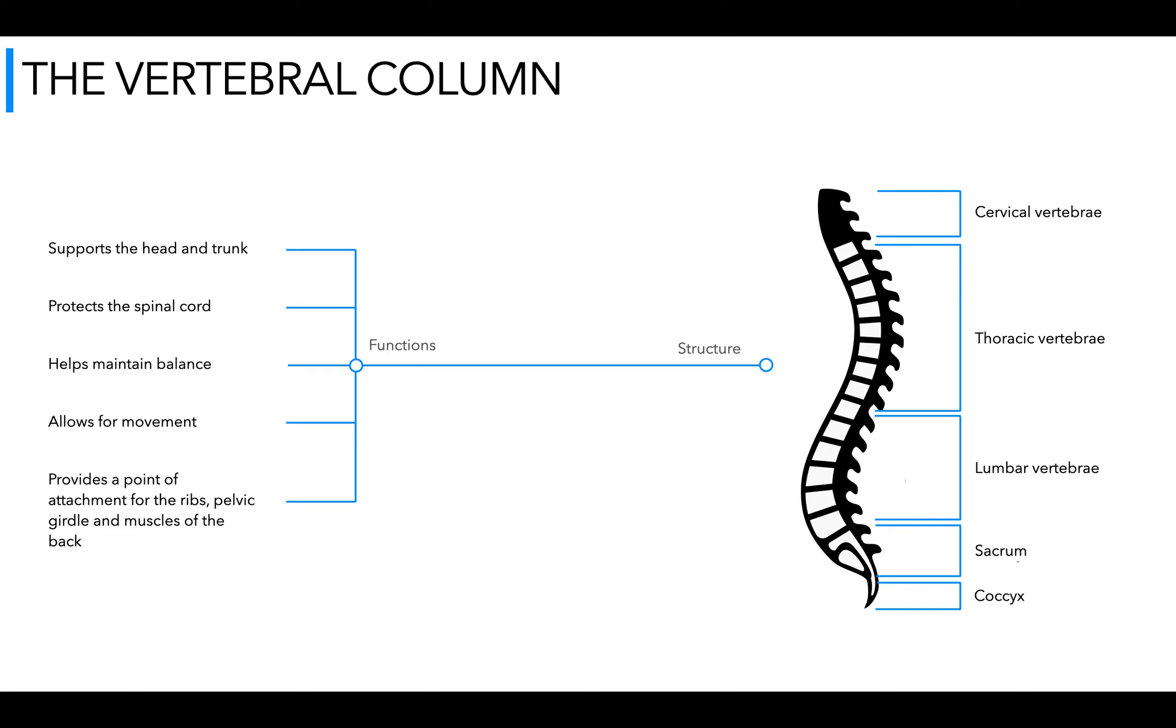Moving on for our last slide and that's the vertebral column. Starting with the functions of this, it supports the head and trunk, allowing us to hold our cranium up and with some range of movement there such as rotation from the cervical vertebrae.